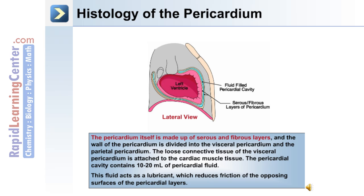The loose connective tissue of the visceral pericardium is attached to the cardiac muscle tissue. The pericardial cavity contains between 10 and 20 ml of pericardial fluid. This fluid acts as a lubricant to reduce friction of the opposing surfaces of the pericardial layers.